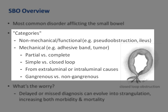Mechanical small bowel obstruction may be secondary to extraluminal causes, such as hernias or an adhesive band, or intraluminal ones, such as stricture from Crohn's disease. Finally, bowel obstruction may be gangrenous versus non-gangrenous.